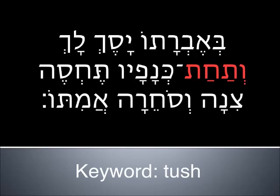V'tachat kenafav techseh. Tachat is a preposition meaning under. You can remember this through Yiddish as tuchis, which comes into English as tush — literally your under part, the part you sit on. It can also mean 'instead of' or 'in place of,' as seen in Genesis 22 where Abraham sacrifices the ram tachat — instead of — his son Isaac. Some say Abraham burned both and Isaac was restored to life, though the speaker is uncertain. Tachat also appears when the people are at Mount Sinai: they are tachat hahar — not under the mountain but at the foot of it. Some say the mountain raised into the air and functioned as a wedding chuppah.